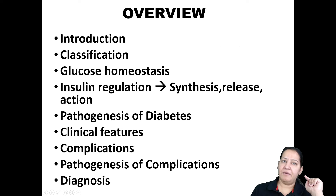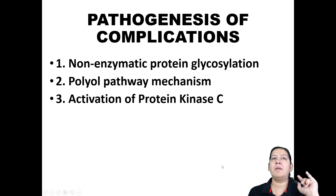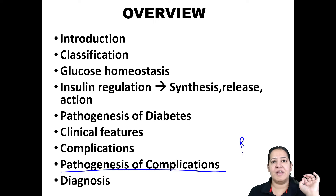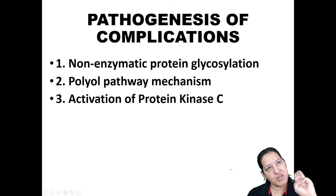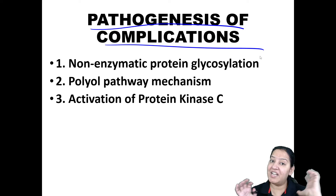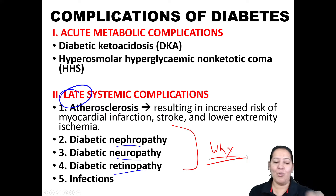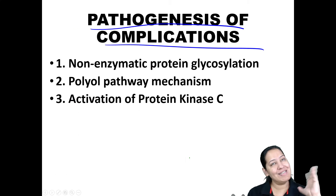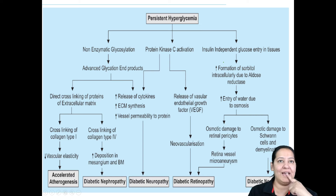Now let's come to the late complications. I will teach you the pathogenesis — why these three organs (kidney, nerves, retina) are involved. There are three mechanisms. Number one: non-enzymatic protein glycosylation. In a diabetic person (both type 1 and type 2), there is excess sugar in the blood. This excess glucose combines non-enzymatically with proteins of the body — like collagen, hemoglobin, lens proteins — and forms glycated proteins.